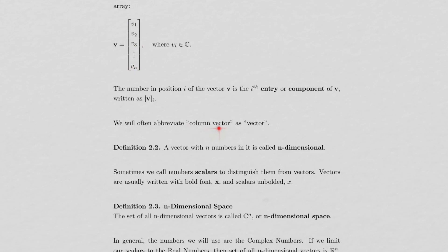Sometimes we'll just refer to a column vector as a vector. Later in the course, we'll learn about other kinds of vectors, so we'll need to be specific. But for now, if it's obvious from context we're talking about column vectors, we may just say vector for short. A vector with n numbers in it is called n-dimensional, and the set of all n-dimensional vectors is called n-dimensional space, written with the symbol C with a superscript n, read as C-n.